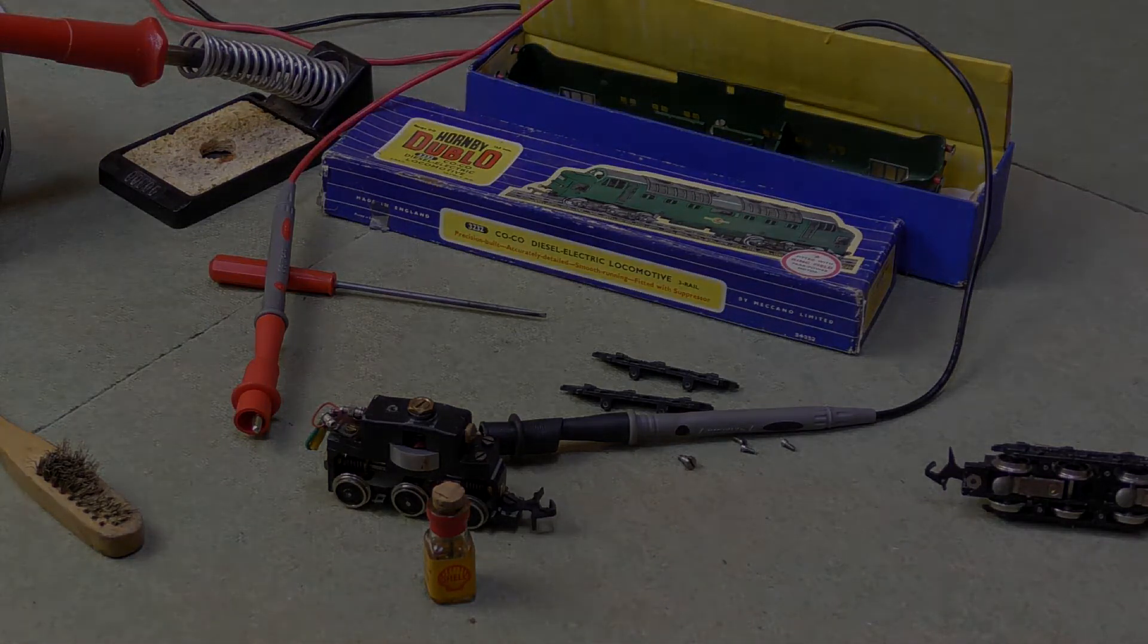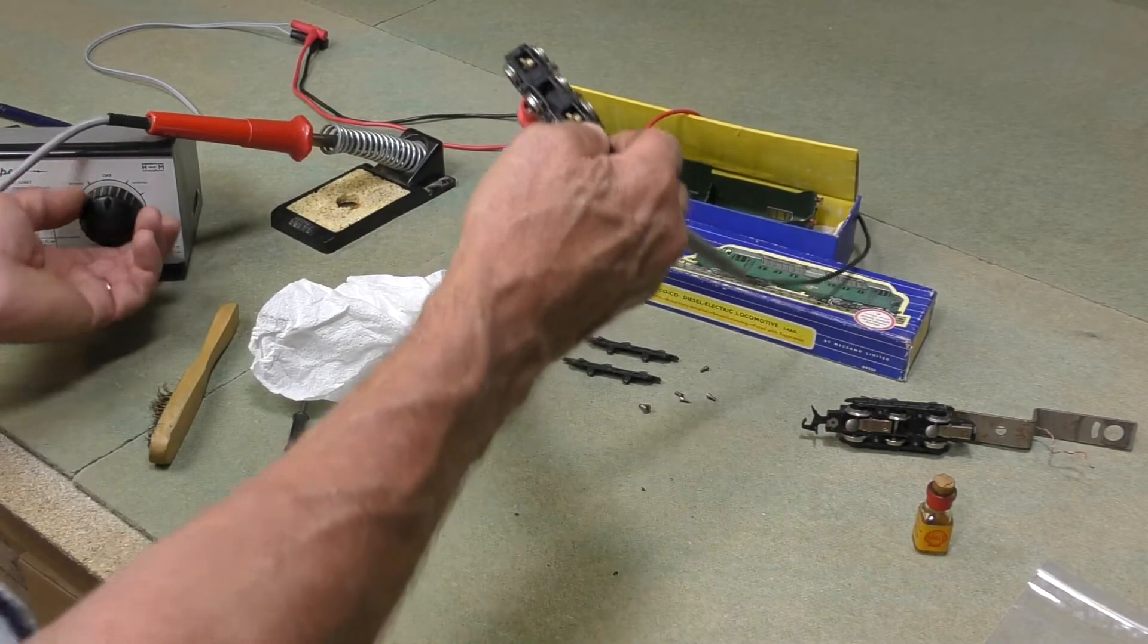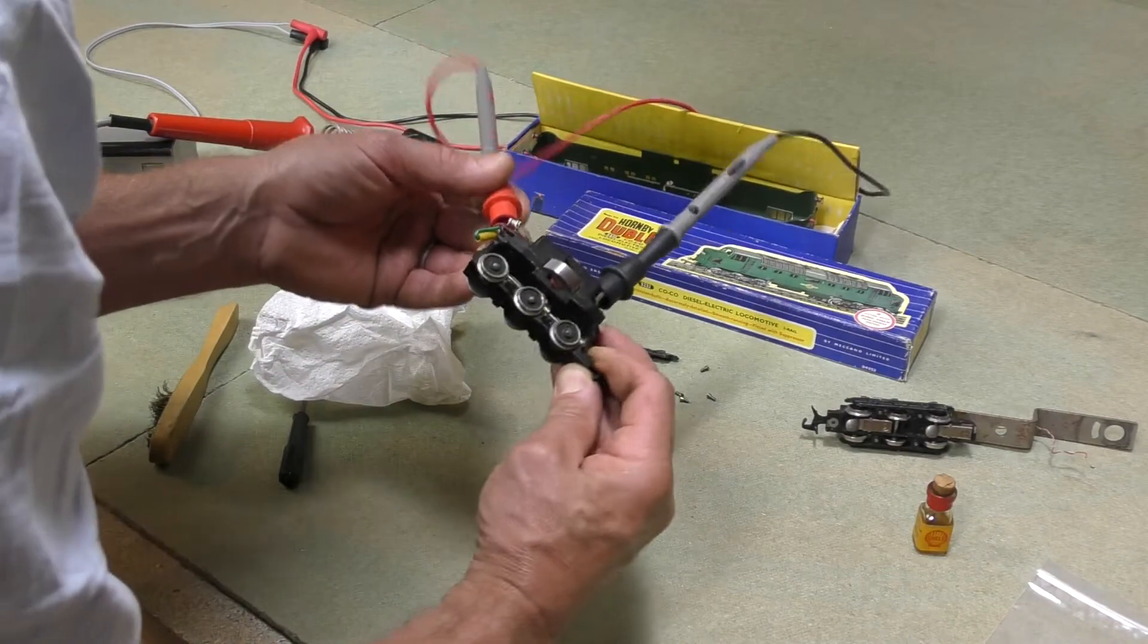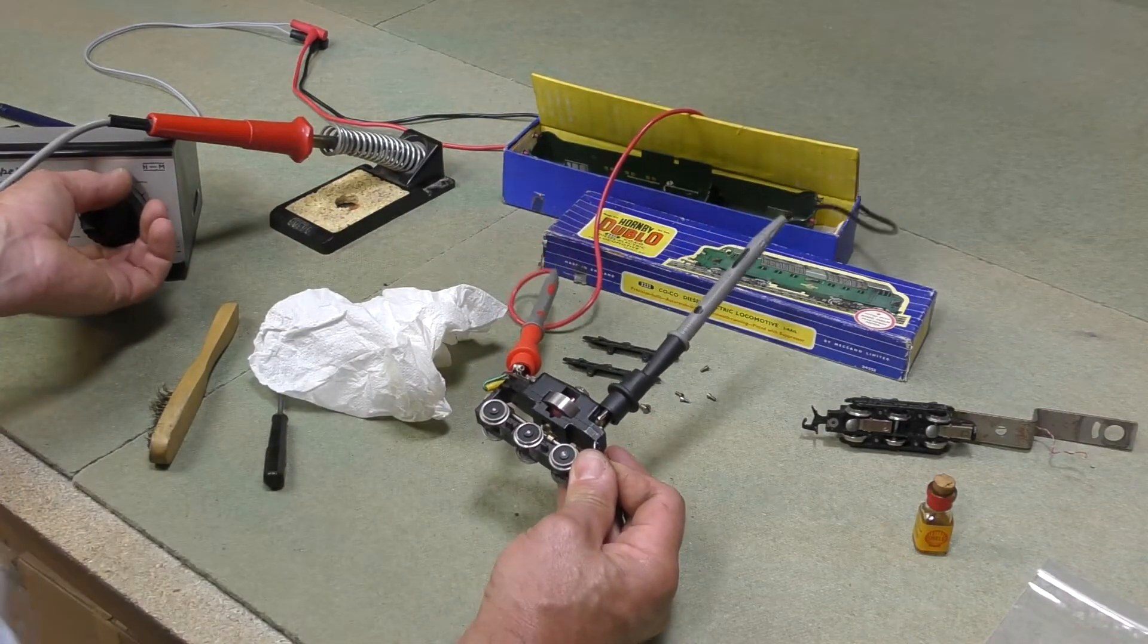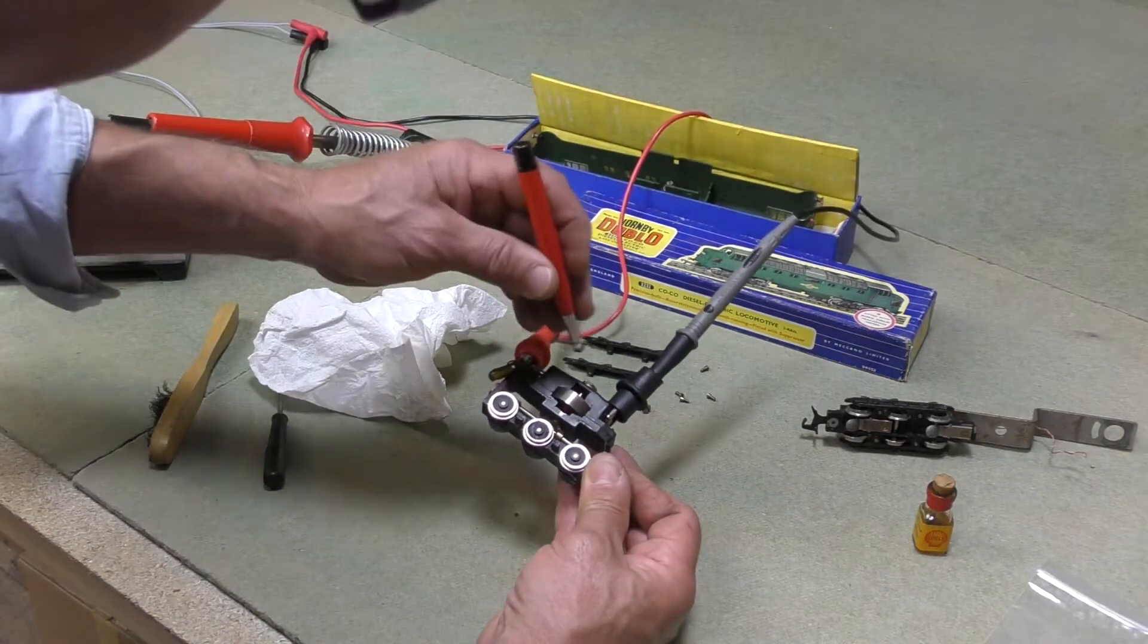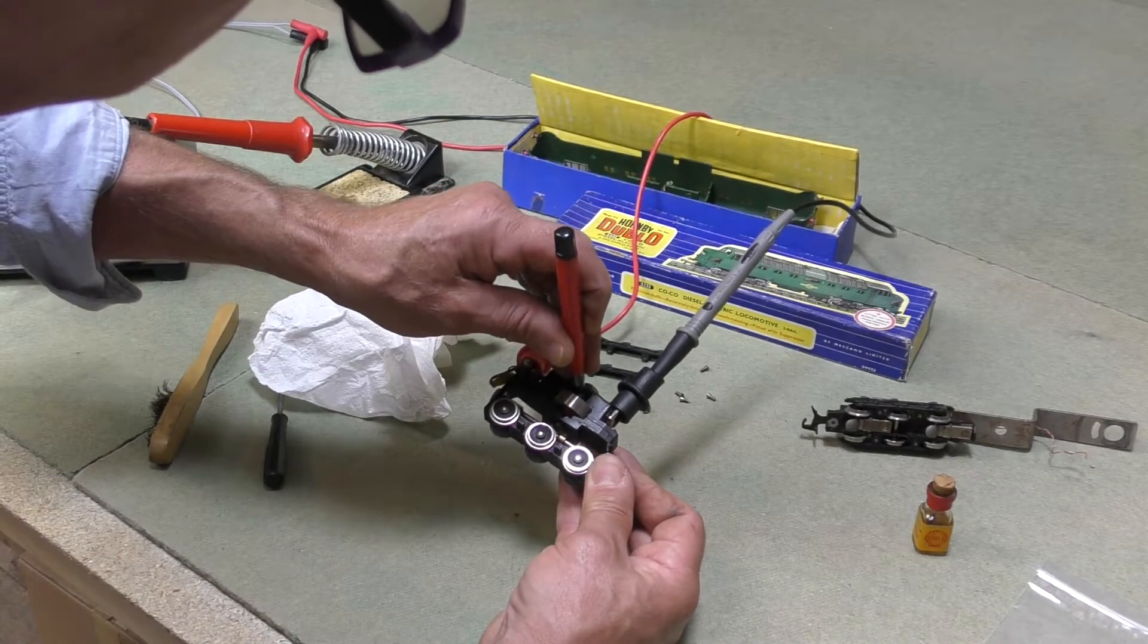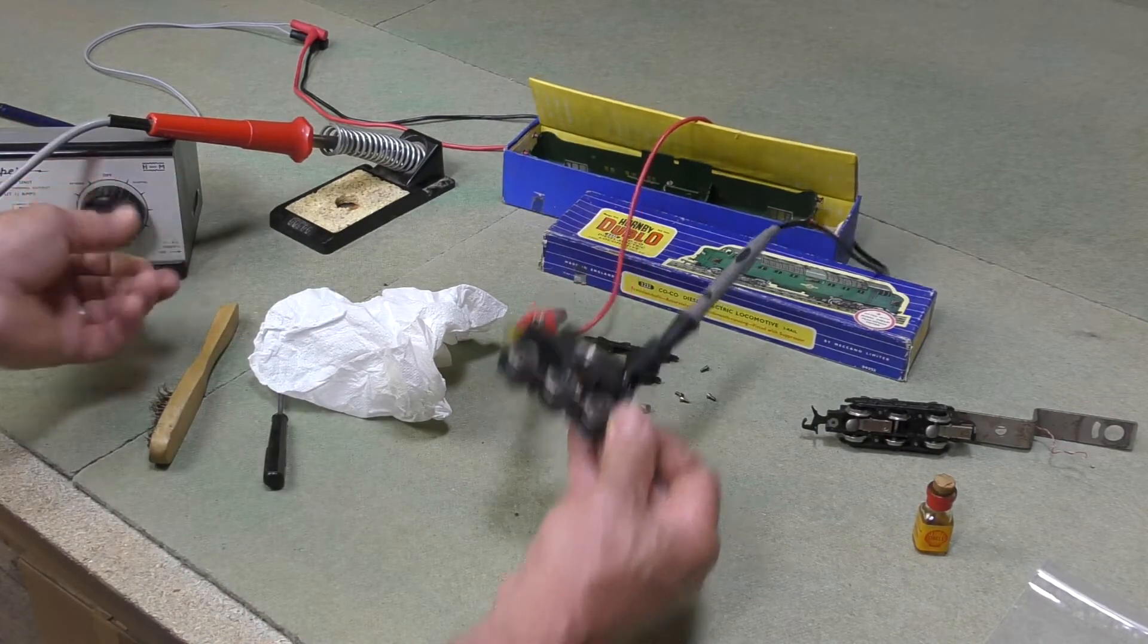Right, well I've got that nicely oiled now and it's running super smooth. Just check my connections. Now I'm just going to use very gently my glass fiber brush just to have a quick clean of the commutator - doesn't really need much. And then I'm going to get it up to full power and start cleaning the grooves in these wheels.